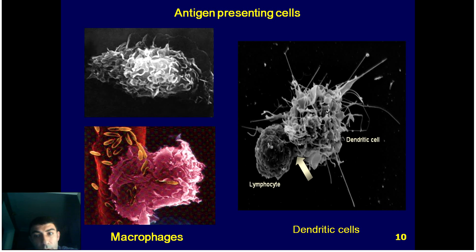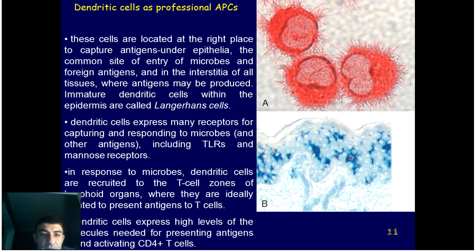We will now shortly review the main types of immune cells, starting with antigen-presenting cells. Typically when we say antigen-presenting cell, we imagine a macrophage or dendritic cell. Nonetheless, B cells as well as some other cells like endothelial cells are also capable of this. Dendritic cells are the real professionals, because they are perfectly located at the site of microbe entrance so that they would be the first to interact with the pathogen.